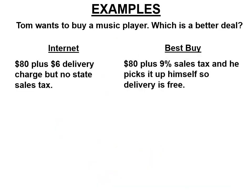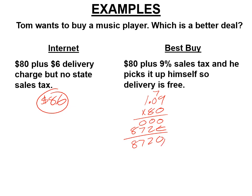Tom wants to buy a music player, which is a better deal. So in the first one, $80 plus a $6 charge, but no state sales tax. Well, that's easy. There's no percent in there. That's $86. The other one, it's $80 plus 9% sales tax. So if you have 9% sales tax, you're going to pay 109% of the original price. So it's 1.09 times 80. You get the row of zeros. Then you get 8 times 9 is 72, 8 times 0 is 0 plus 7, 8 times 1 is 8. And you move the decimal twice. Here, you're going to pay $87.20. So the internet, because in this particular case, you were not paying sales tax, it would have been cheaper.